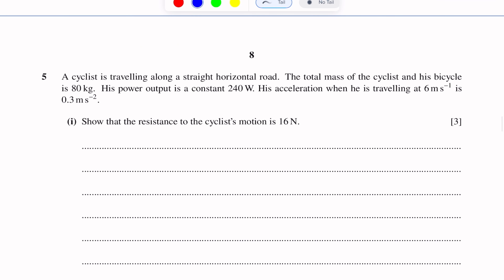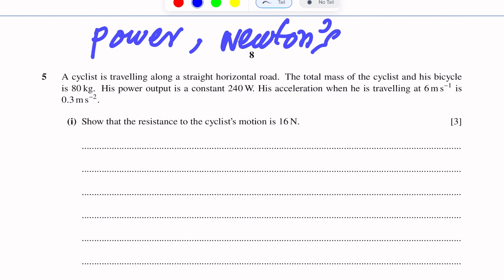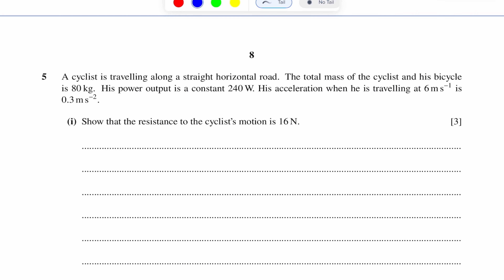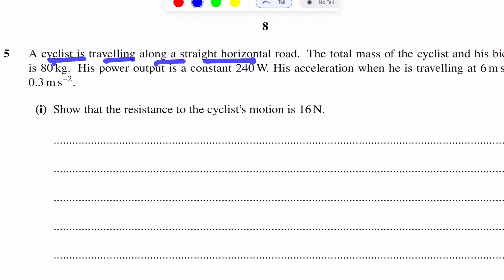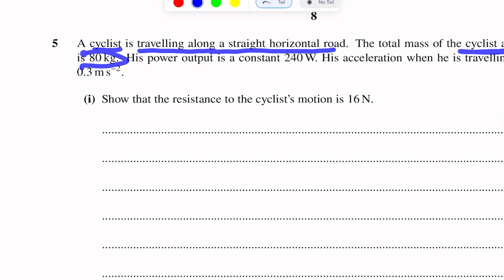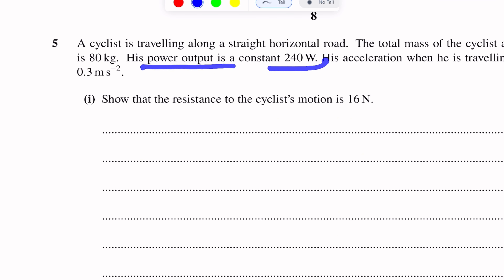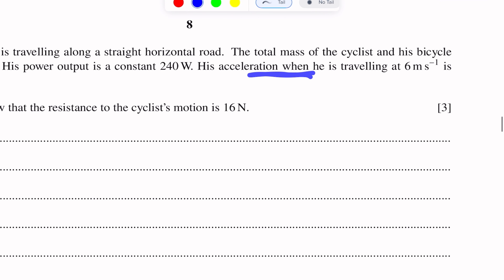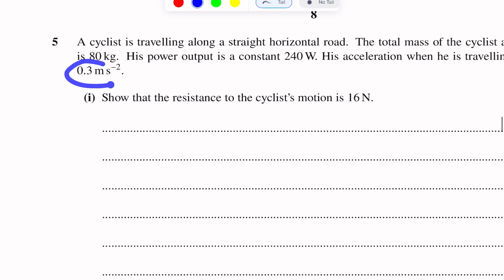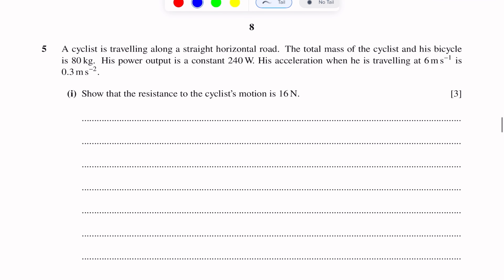Question number five, this question is from power and Newton's law. Newton's second law will be used, especially F equals ma. A cyclist is traveling along a straight horizontal road. The total mass of the cyclist and his bicycle is 80 kg, his power output is 240 watts, and his acceleration when traveling at 6 meters per second is 0.3 meters per second squared. The resistance to the cyclist's motion is 16 Newton on a horizontal road.